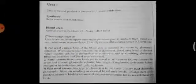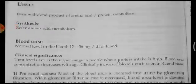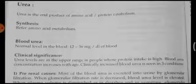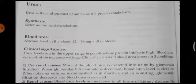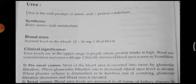Urea is the end product of amino acid or protein catabolism, as studied in the urea cycle. The normal urea level in adults is 12 to 36 mg per deciliter of blood. If blood urea is within this range, the person is normal; whenever urea concentration increases above 36 mg per deciliter, it indicates complications.